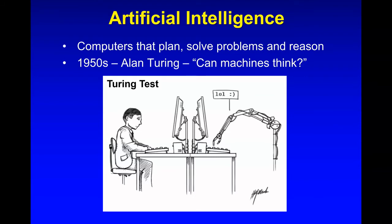The idea of whether we can get computers to plan, solve problems, and reason goes back to the 1950s. Alan Turing asked the question: can machines think, and how would you know if a machine could think? That led to what we've called the Turing test. This is an exciting time because there are credible examples of computers passing the Turing test — Google Assistant scheduling a haircut appointment over the phone, with the human on the other end having no idea they were talking to a computer.